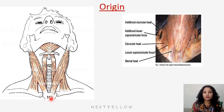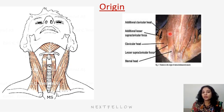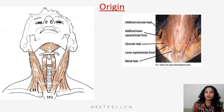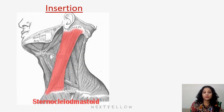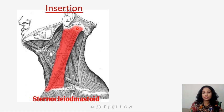It gains origin from the sternum and the clavicle. The part getting origin from the sternum is called the sternal head, and the part from the clavicle is called the clavicular head. Both heads join together and finally insert into the mastoid process, gaining origin from the clavicle and sternum.